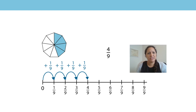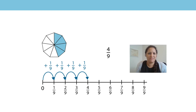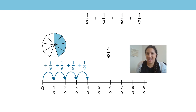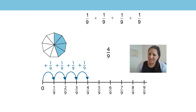How can we write this using repeated addition of the unit fraction? Well, one ninth add one ninth add one ninth add one ninth equals four ninths.